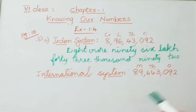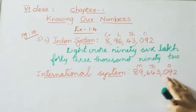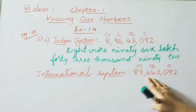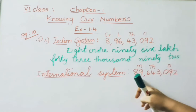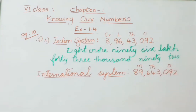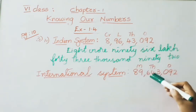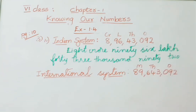In the International system for the same number, separating three digits at a time: first three ones period, next three thousands period, then millions. Reading: eighty nine million six hundred forty three thousand ninety two.